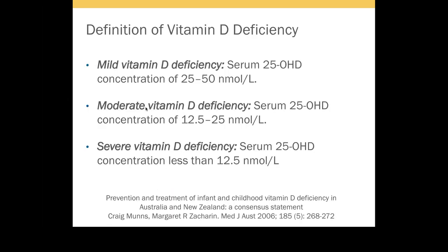It is a spectrum — it could be vitamin D deficiency only, calcium deficiency only, or a combination. There are three severity levels based on vitamin D concentration: mild deficiency is 25 to 50 nanomoles per litre; moderate deficiency is 12.5 to 25 nanomoles per litre; and severe deficiency is less than 12.5 nanomoles per litre. To convert to nanograms per decilitre, divide by 2.5.